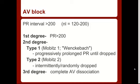Third degree is your third type — a complete AV dissociation, meaning your P waves and your QRS complexes have no relation to each other. You can march them out individually to confirm this.